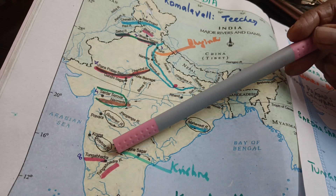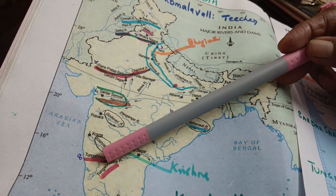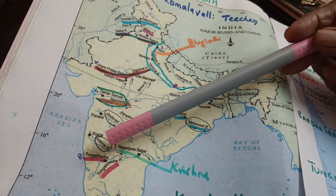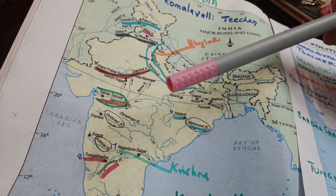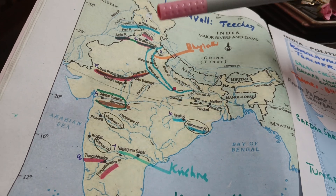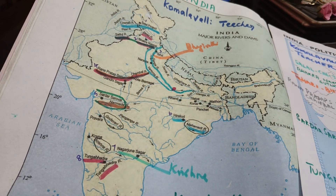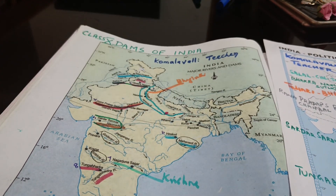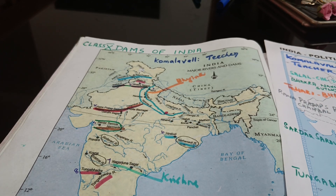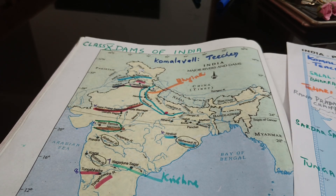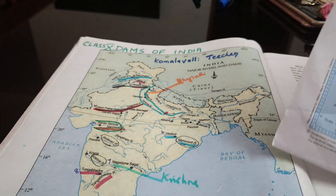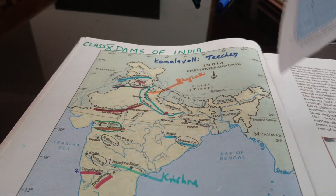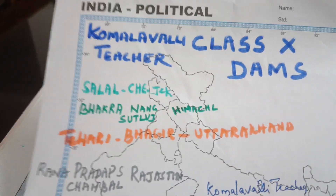Moving further, you reach Karnataka. In Karnataka you can see the Tungabhadra Dam, which is constructed on the Tungabhadra river itself. Just knowing the river is not enough, so that is why you should go through the states as well.